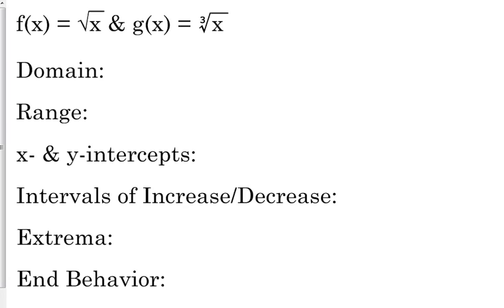So, domain. Remember the question you should always ask yourself when trying to figure out the domain of a function is: are there any issues? Are there any x values that I can't plug in because I won't get an answer? So let's think about the square root — what can't we take the square root of? Negative numbers. We can take the square root of zero, since zero times zero is zero, but we can't take the square root of negatives.